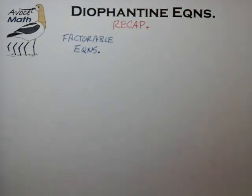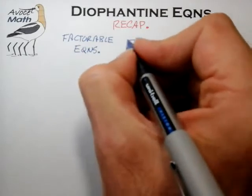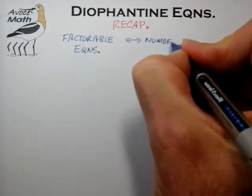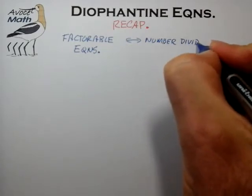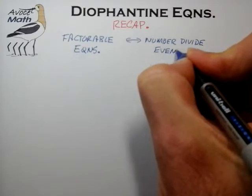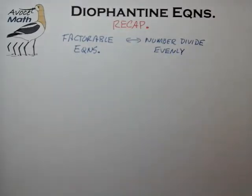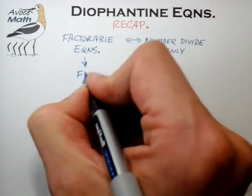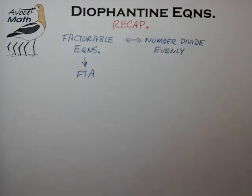These are probably the more straightforward of the types of Diophantine equations. The thing I wanted to point out is that when we're dealing with factorable equations, the very nature of factoring expressions means that you're dealing with numbers that divide evenly — and by evenly I mean no fractions left over. This seems like an obvious statement, but you have to keep this in mind during your problem solution, because when you're dealing with numbers that divide evenly, it means that you can tap into the fundamental theorem of arithmetic to compare integer factors and their exponents.